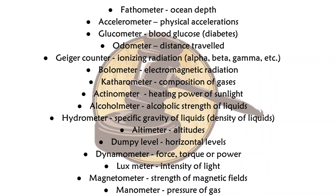These are some other meters, instruments and apparatuses used to measure important things — part of general knowledge. First is fathometer — it measures ocean depth. Pyrometer measures high temperatures. Accelerometer measures physical acceleration.